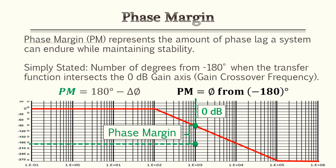Next we have our phase margin. The phase margin represents the amount of phase lag a system can endure while maintaining stability. Simply stated, if you're trying to find this on a Bode plot, it's the number of degrees from negative 180 when the transfer function intersects the zero decibel gain threshold. That's also called your gain crossover frequency.